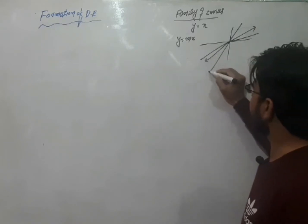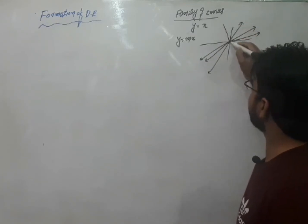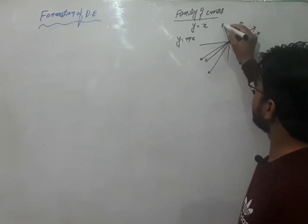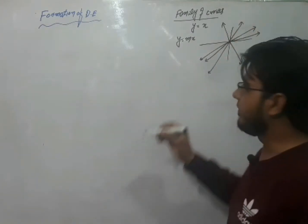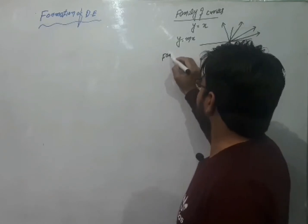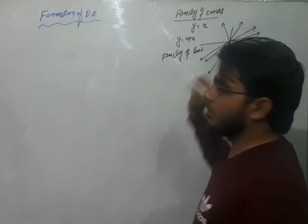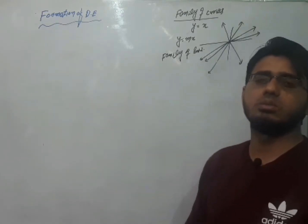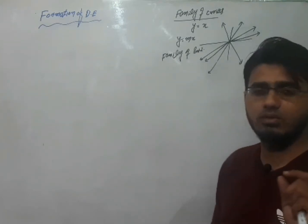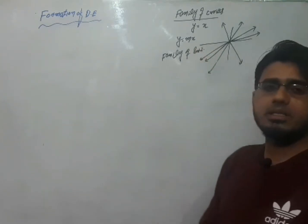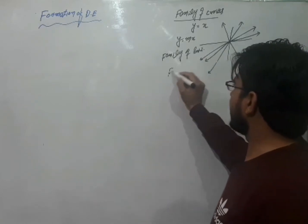यह lines जो center में से pass कर रही होंगी — ऐसी बहुत सारी lines जिनका center origin है — यह family of lines को represent कर रही होंगी. जब भी आपके पास कोई equation या relation हो और उसमें कोई arbitrary constant use हो रहा हो, वो family of curves को represent कर रहा होता है. यहाँ M एक arbitrary constant है, यह family of curves को represent कर रहा है.